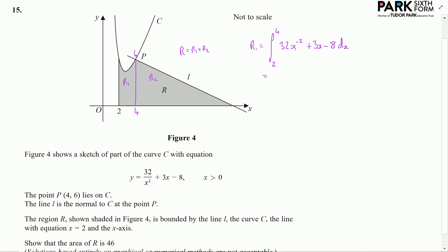Now when I integrate, I add 1 to the indice, so that becomes x to the power of minus 1, divide by that new indice, and that becomes minus 32. Add 1 to the indice, that becomes x squared, divide by that new indice, and that becomes 3 over 2. Then this integrates to give me 8x, and I'm integrating that between 2 and 4.